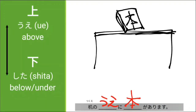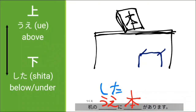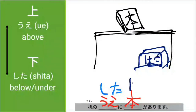Next, pwede gamitin naman natin ang Shita. Shita means 'below.' Ano pwede natin ilagay sa ilalim ng table? We can put a box — 'hako.' So, 'hako' is a box. 'Tsukue no shita ni hako ga arimasu' — so, meron daw box sa ilalim ng table.